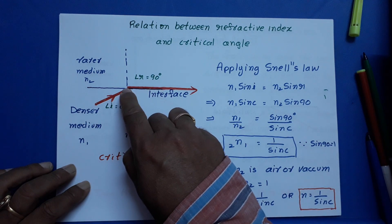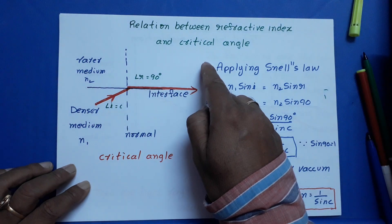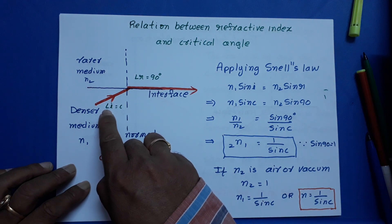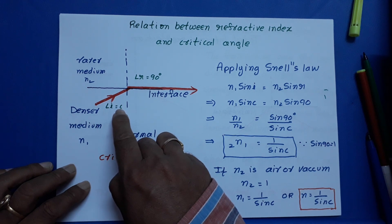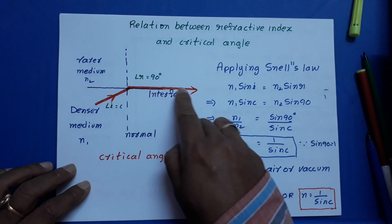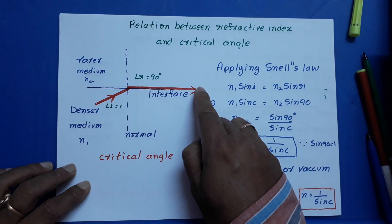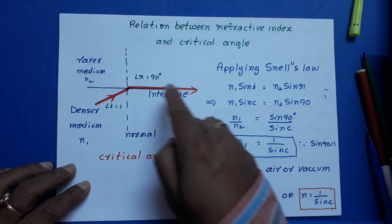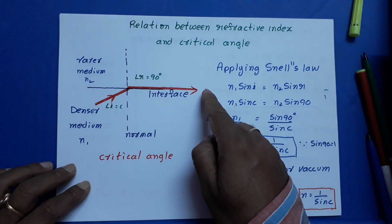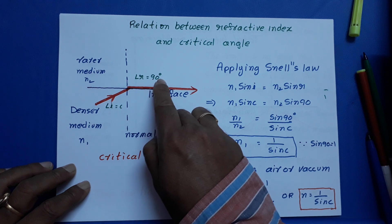A light ray is passing from denser medium into rarer medium. Now, angle of incidence is equal to critical angle. Then what about the refracted ray? It grazes out the interface — that means the light ray passes along the interface. In such a case, small r is equal to 90 degrees.